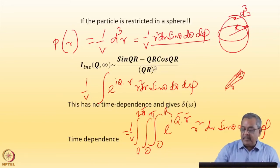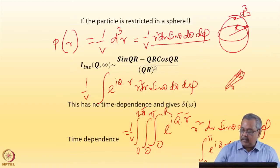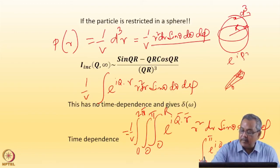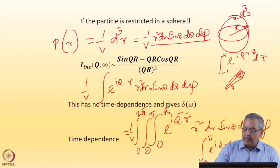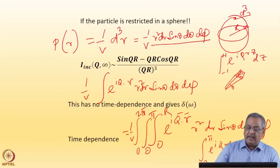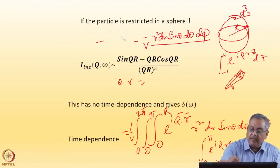We have done this integral many times. With q·r = qr cosθ, we integrate e^(iqr cosθ) sinθ dθ from 0 to π by substituting z=cosθ, giving the integral of e^(iqrz) dz from -1 to +1. Then multiplying by r² dr and integrating from 0 to R gives the form factor result. The incoherent intermediate scattering function I_incoherent(q) then has the form of the sphere form factor — equivalent to the result we obtained for the sphere form factor.